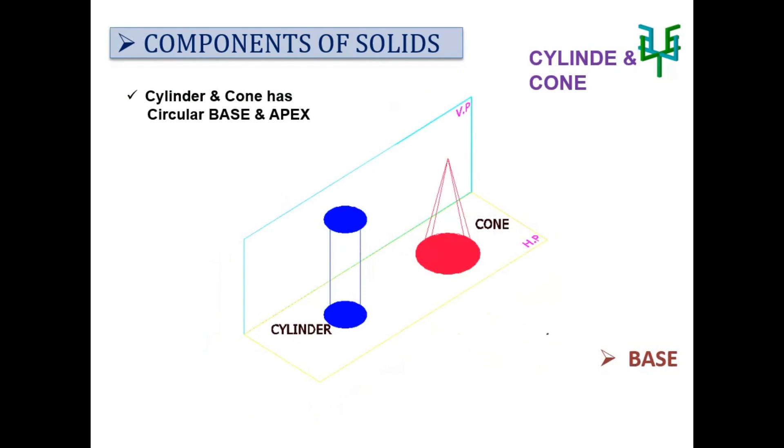Cylinder and cone has circular base and an apex point. Cylinder and cone has no base edges, no base corners, no rectangular faces and no triangular faces.